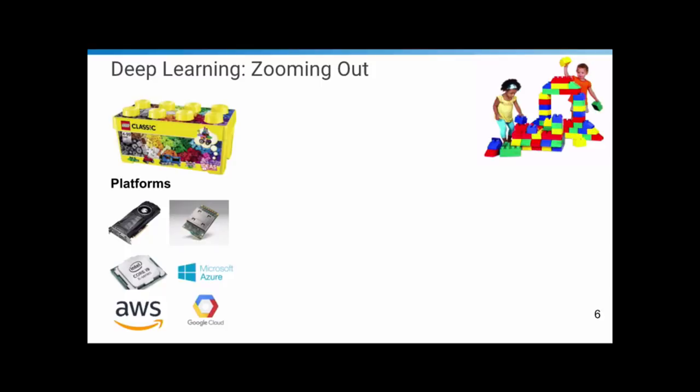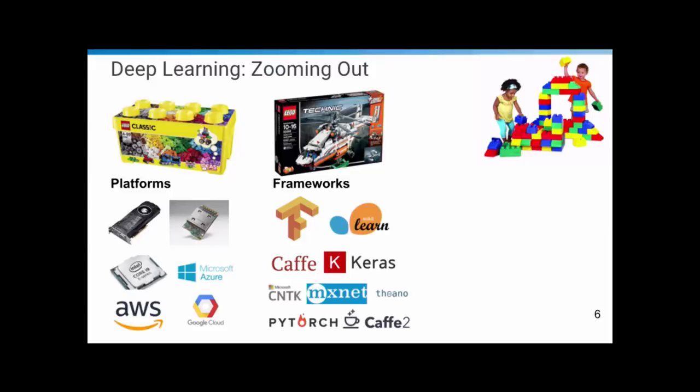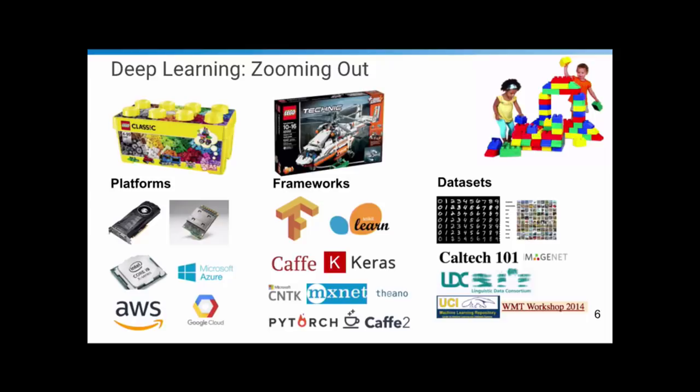The framework is another crucial early decision. There are many frameworks available — almost too many — and you need to understand the differences between them. For researchers, frameworks might limit what you can try easily. For deployment, some frameworks have better tools for certain platforms. There's also a vast amount of datasets to choose from. If you have a company you may have your own datasets, but deciding what those look like and how big they need to be are all quite important decisions.